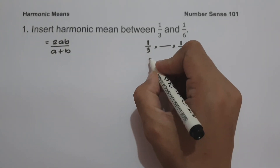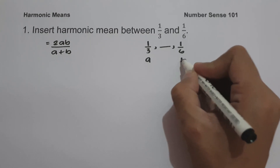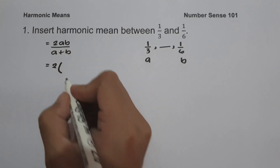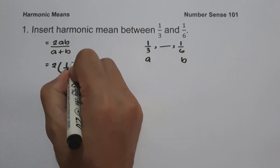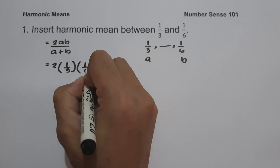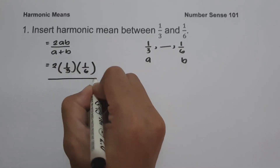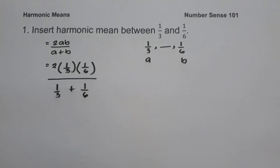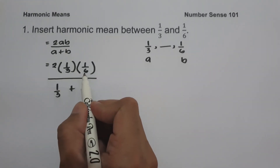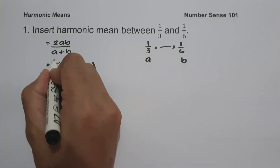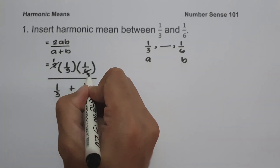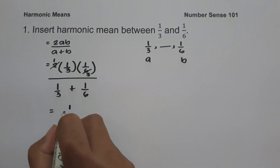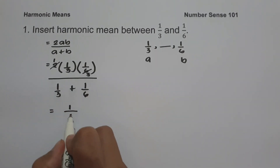The value of a is one-third and the value of b is one over six. So we have 2 times one-third times one over six, divided by one-third plus one over six. Since 2 and 6 are divisible, we can cancel them: 2 becomes 1 and 6 becomes 3. So we have 1 times 1 times 1, that is 1, and 3 times 3, that is 9.